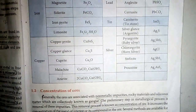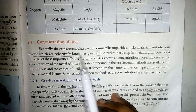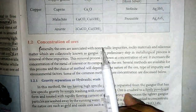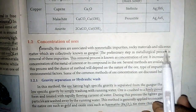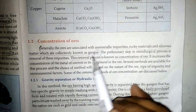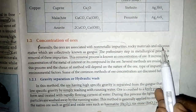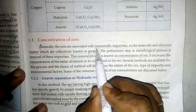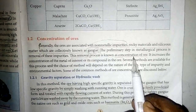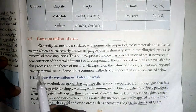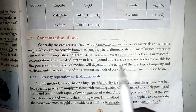Concentration of ore: generally, ores are associated with non-metallic impurities known as gangue, as well as magnetic impurities. The first process is concentration of ore. Several methods are available, and the choice of method depends upon the nature of the ore.